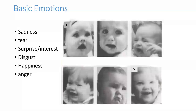Basic emotions consist of six discrete and identifiable emotions, including sadness, fear, surprise or interest, disgust, happiness, and anger. If I were to ask you what emotion the baby in picture number six was feeling, the majority, if not everyone, could easily say happiness. Same with all of the other pictures. The majority of people have no trouble matching these six emotions to these pictures.